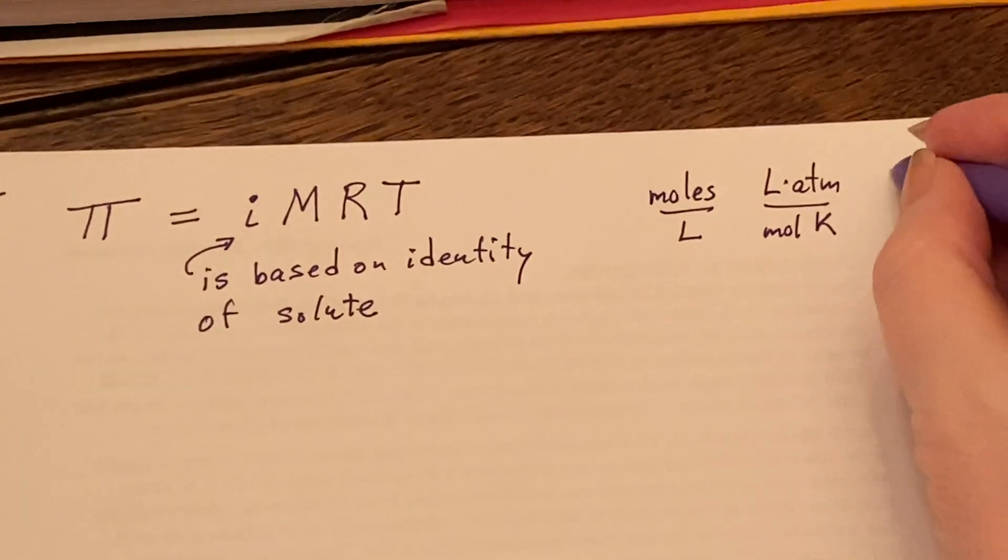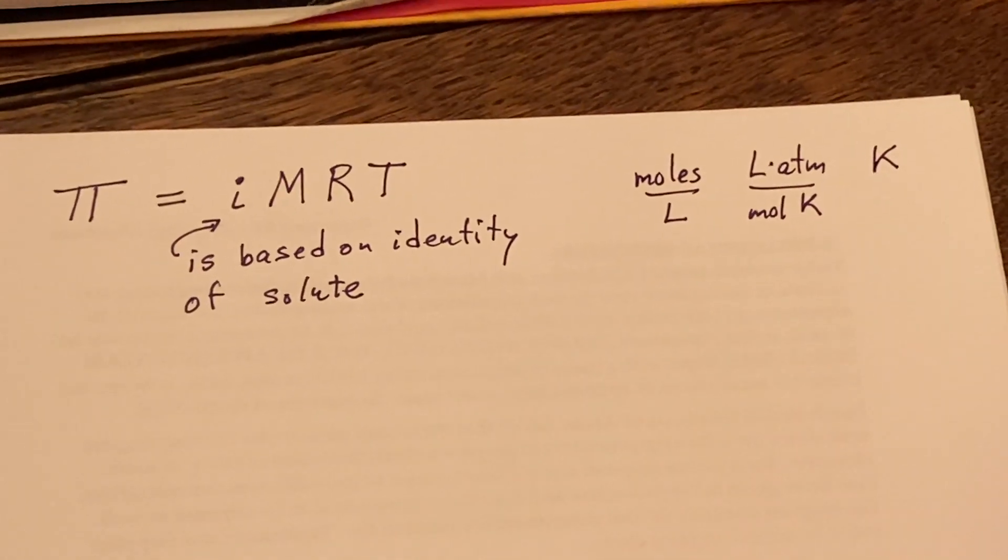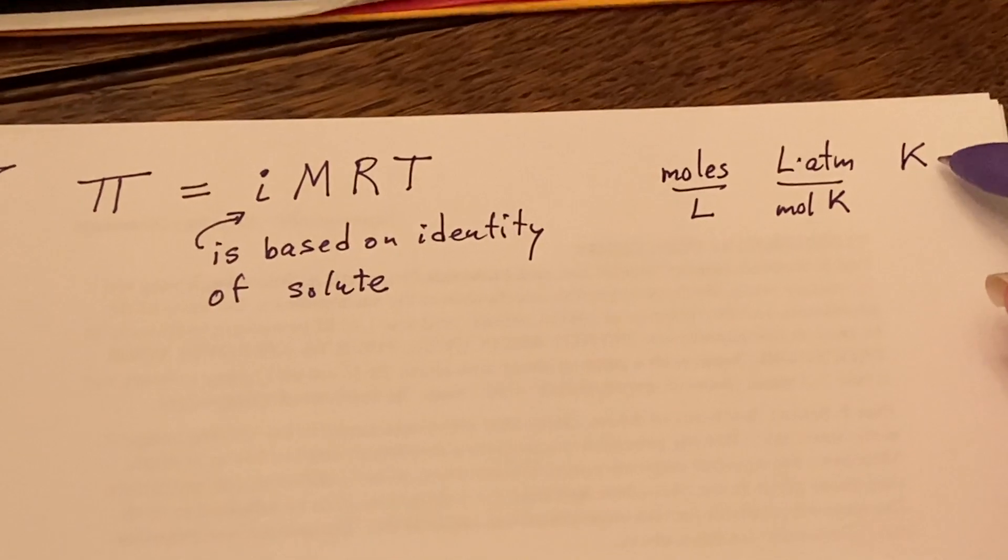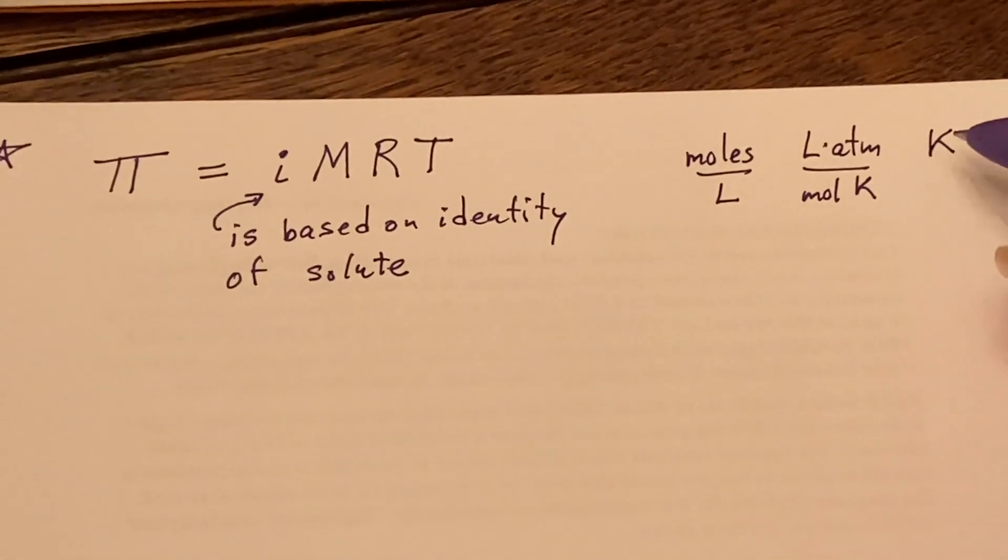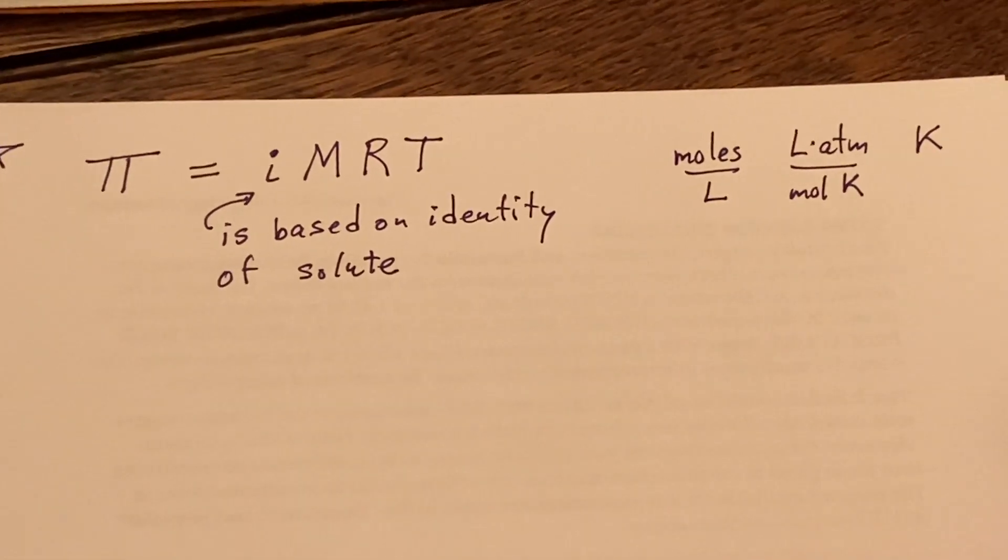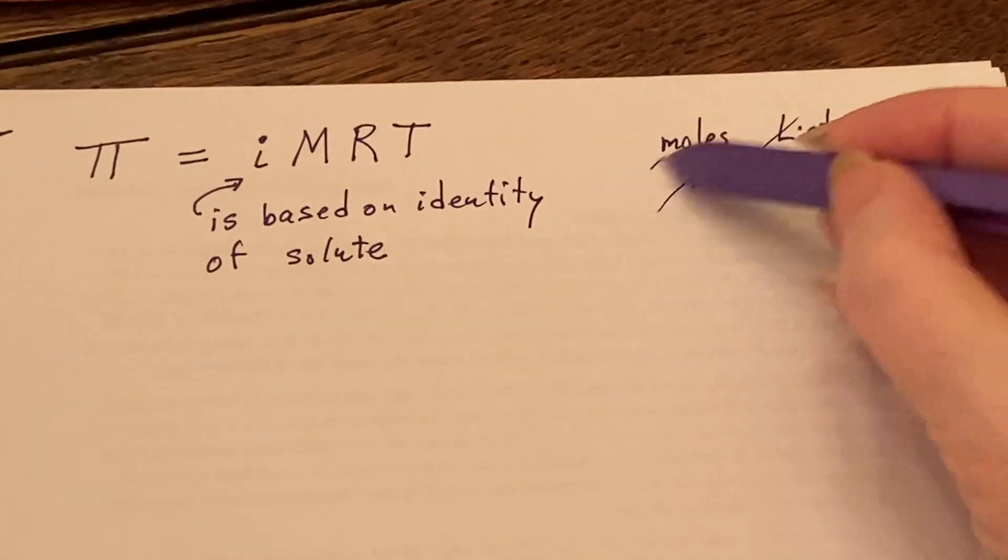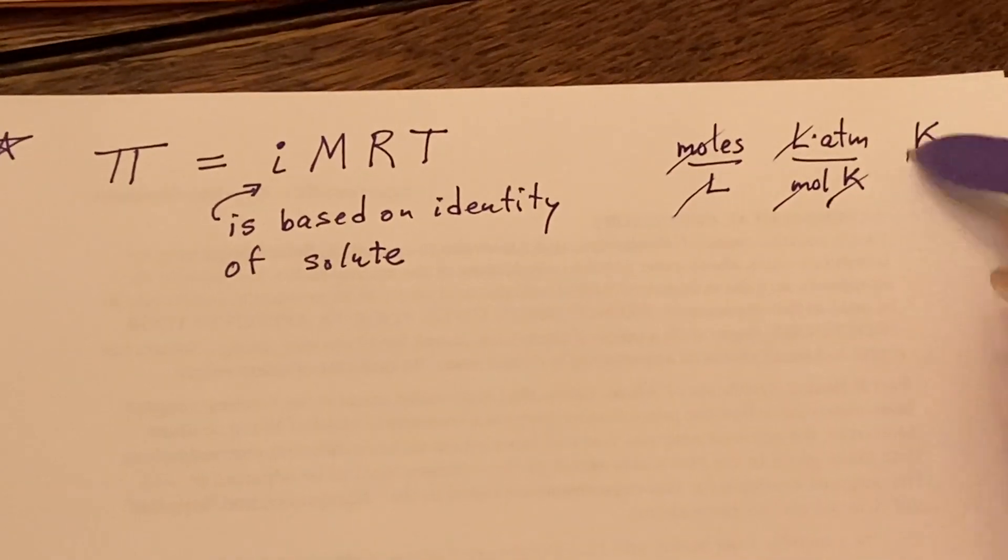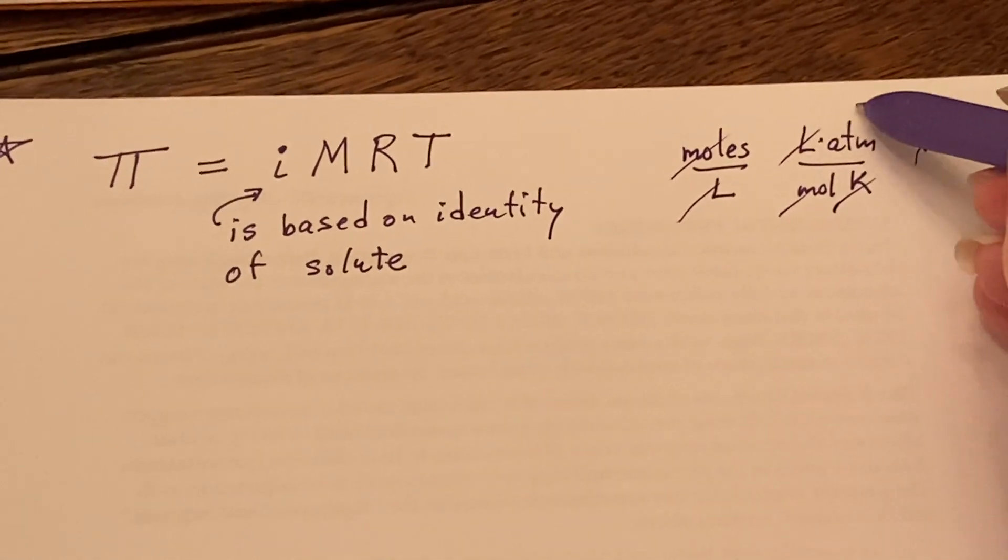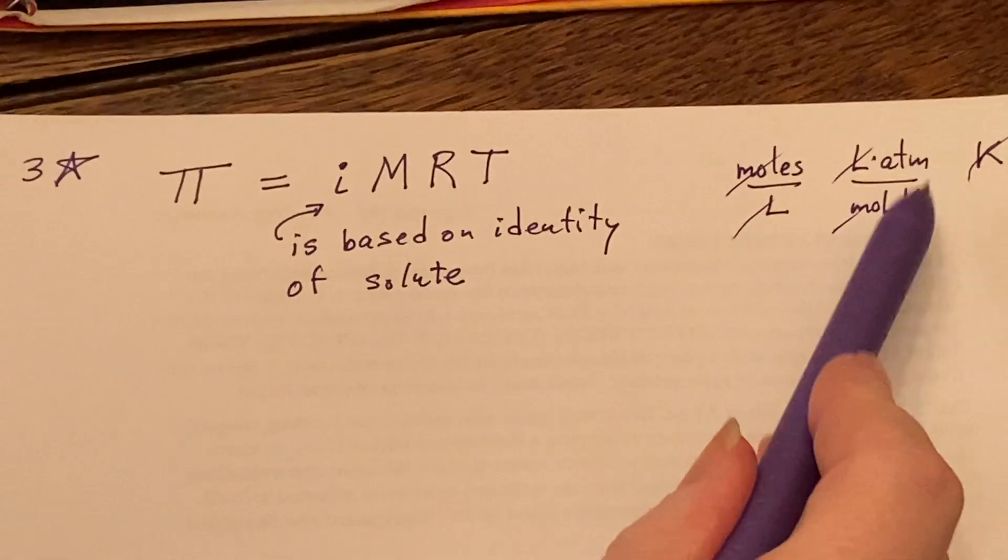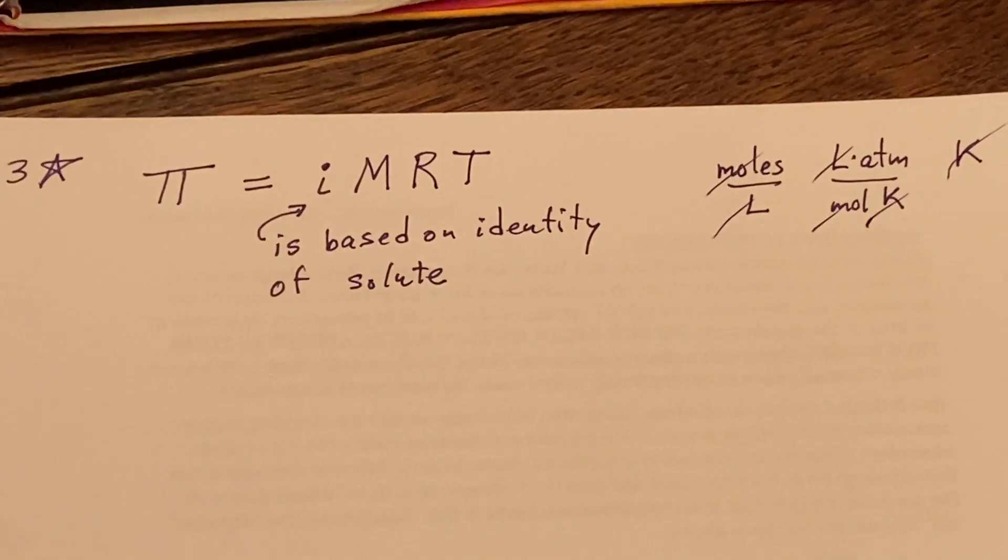R, the gas constant, we usually say that's liter-atmospheres over moles and kelvin. And T, temperature, is in kelvin. So whenever we work one of these problems we are going to want to make sure that we change our temperature into kelvin first thing we do. Now if you look at this, you will see the liters will cancel, the moles will cancel, kelvin will cancel, and you'll be left with atmospheres, which is good because this is supposed to be an osmotic pressure.